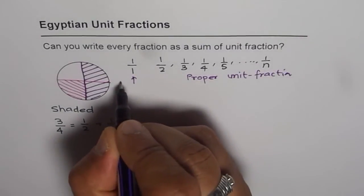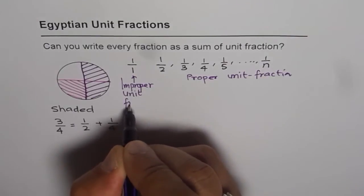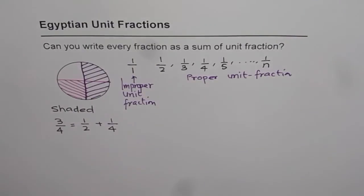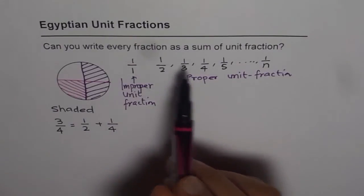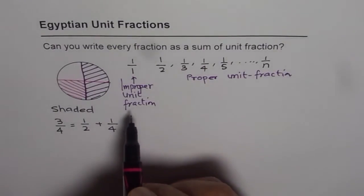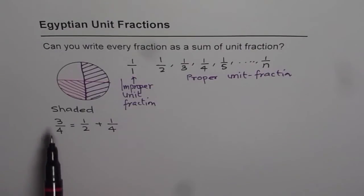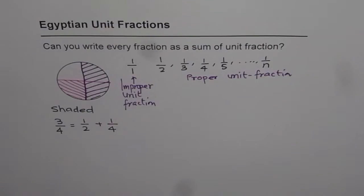One-over-one is the only improper unit fraction, since the numerator is one. All other fractions with numerator one and any whole number in the denominator are proper unit fractions. One-half is the greatest proper unit fraction. As we've seen, we could write three-fourths as a combination of one-half and one-fourth, so we have written at least one fraction as a combination of unit fractions.